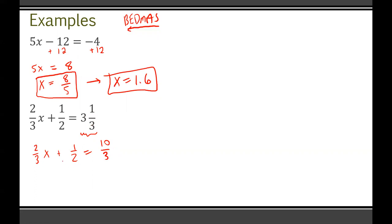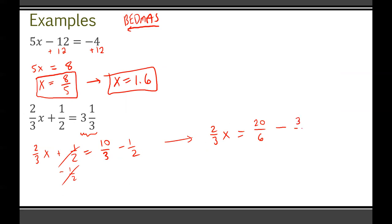No different than the last question — get rid of any addition or subtraction, so subtract 1/2 from both sides. Now we have 10/3 minus 1/2, but you can't subtract fractions without a common denominator. The lowest common denominator of 3 and 2 is 6, so this becomes 20/6 minus 3/6. We can now subtract the numerators, giving us 2/3 x = 17/6.